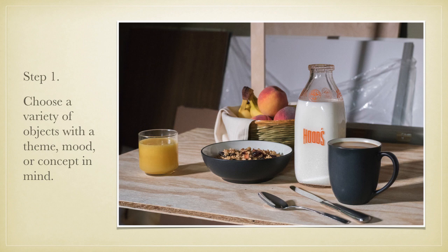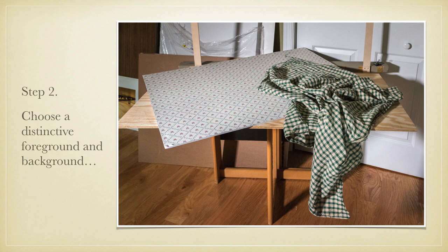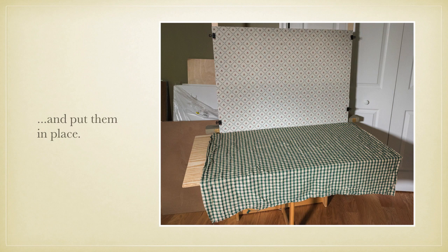Step one of our workflow is to choose a variety of objects with a theme, mood, story, or concept in mind. Artistic expression is why we do traditional still life photography in the first place, and is an important part of the definition. In this case, the objects chosen are around the theme of a good, wholesome breakfast. Step two is to choose a distinctive foreground and background and put them in place. The foreground and background should have some relationship to the objects and contribute to the overall intent. Here I've chosen vintage wallpaper and a checkered tablecloth to reinforce the simple, wholesome country kitchen quality I have in mind for this image.